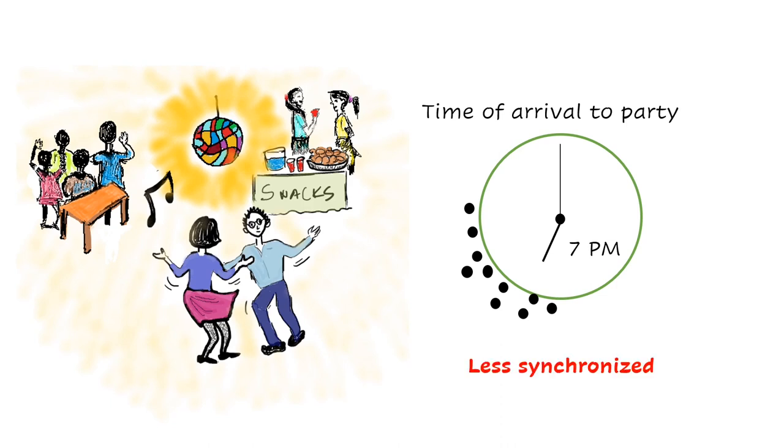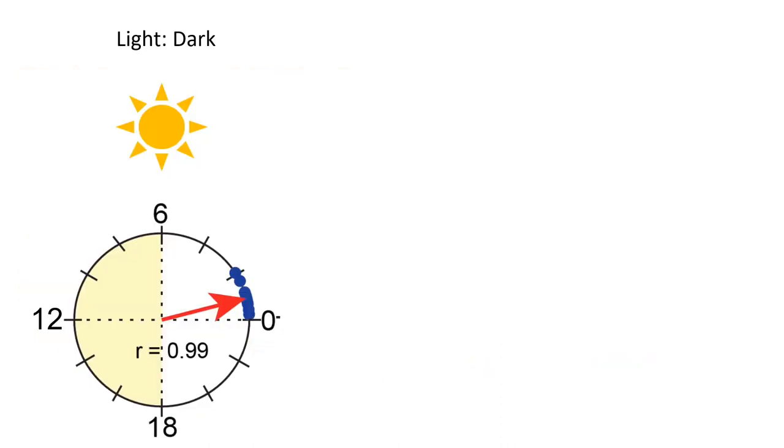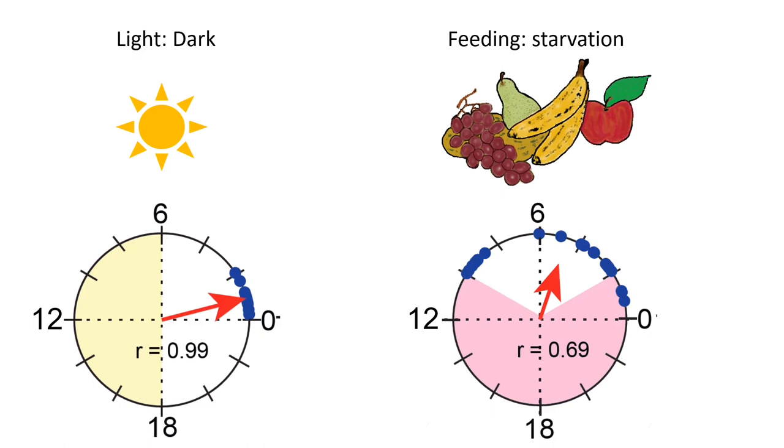We also tested phase synchrony among flies. Light is a strong cue for fly clocks and hence acts like the strong school time signal. Flies show phase synchrony during light-dark cycles. However, we found that food acts like the weak party signal. Flies showed reduced synchrony during feeding-starvation cycles.